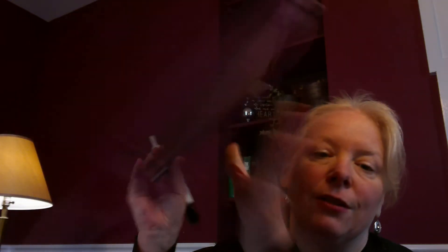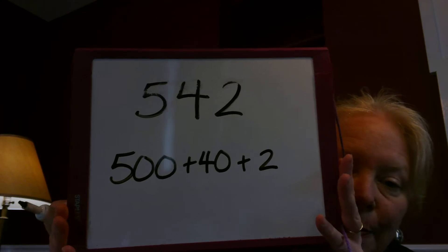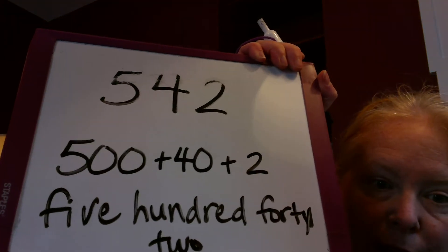If I asked you to write this number in expanded form — that's your second question — this is where you make the number appear bigger, and it would look like this. If I asked you to write it in word form, that's where you actually write the words: five hundred forty-two.